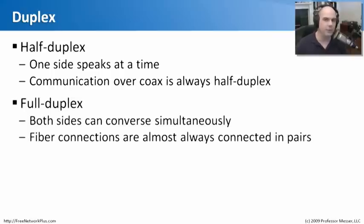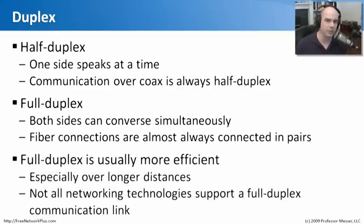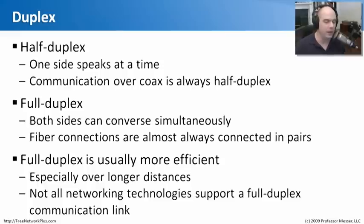Most modern networks use a full-duplex connection. You have multiple wires to choose from, and computers can listen and talk at the same time. One pair of wires could be sending information out and another pair sending information in, simultaneously. You see this in copper and almost always in fiber, because fiber connections are almost always connected as a pair with a transmit side and a receive side, allowing full-duplex communication. It's almost always more efficient, especially over longer distances, because you don't have to wait for somebody to finish talking before receiving. Not all topologies allow full-duplex, but generally you'll want to use it when possible.